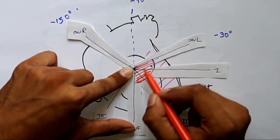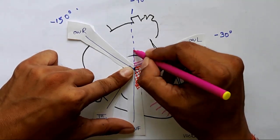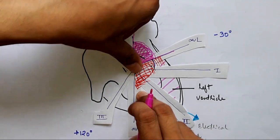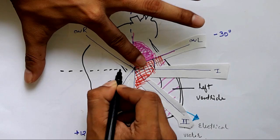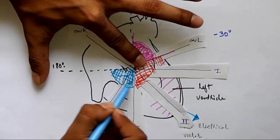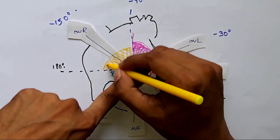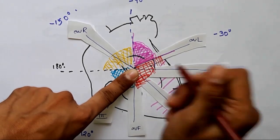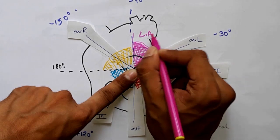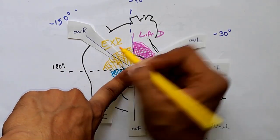If the electrical axis lies from minus 30 to plus 90 degrees, it is the normal axis. Any deviation from minus 30 to minus 90 degrees is left axis deviation, shown in pink. An axis from plus 90 to 180 degrees is right axis deviation, shown in blue. The region from 180 to minus 90 degrees is the extended axis deviation, shown in yellow — this is rare.